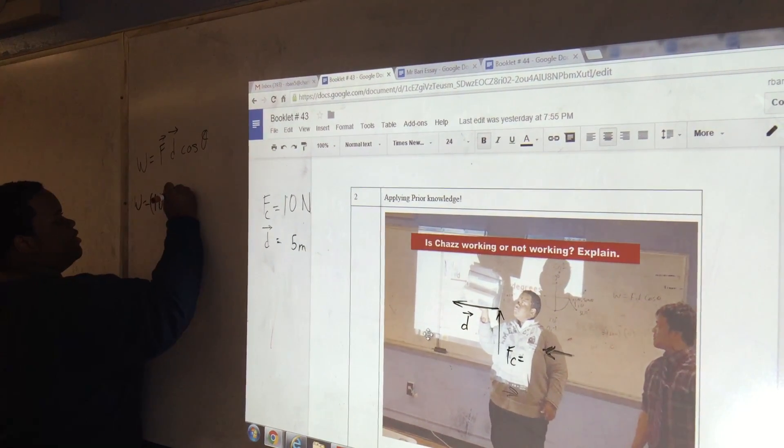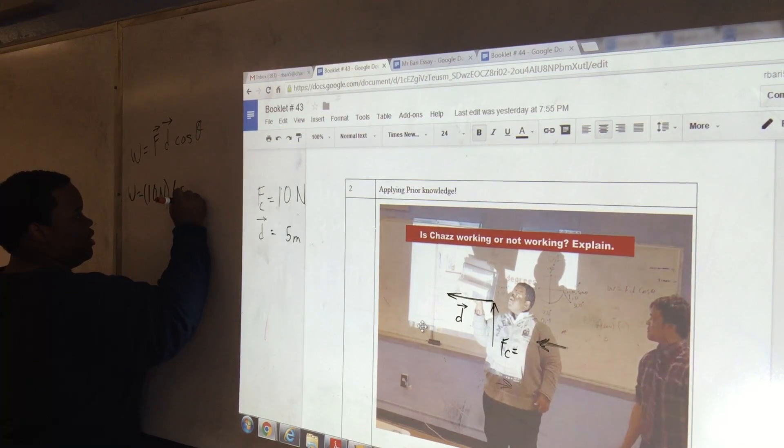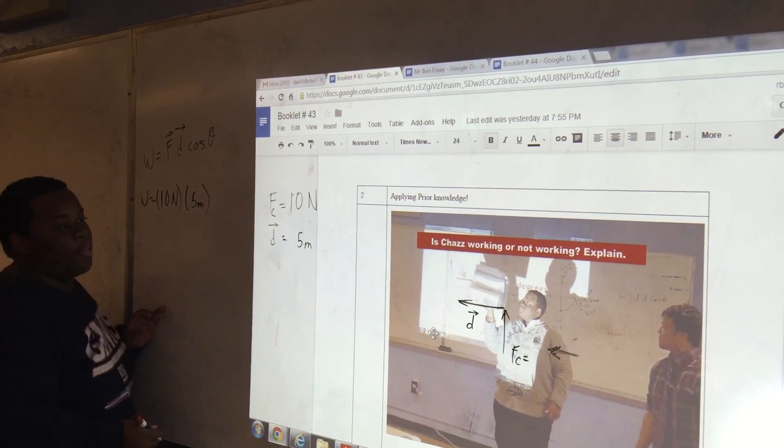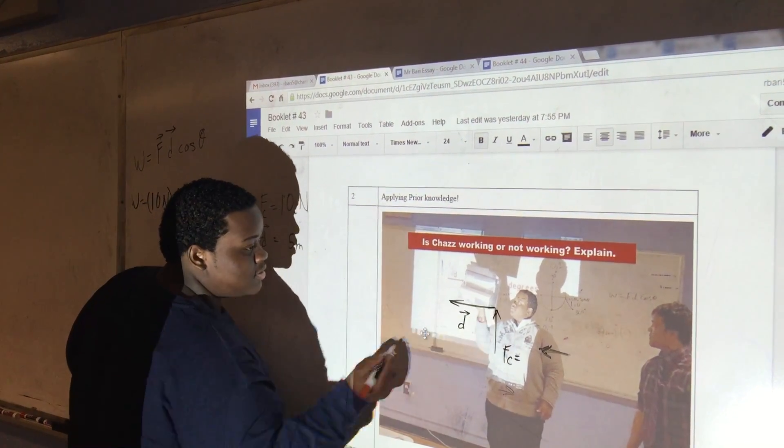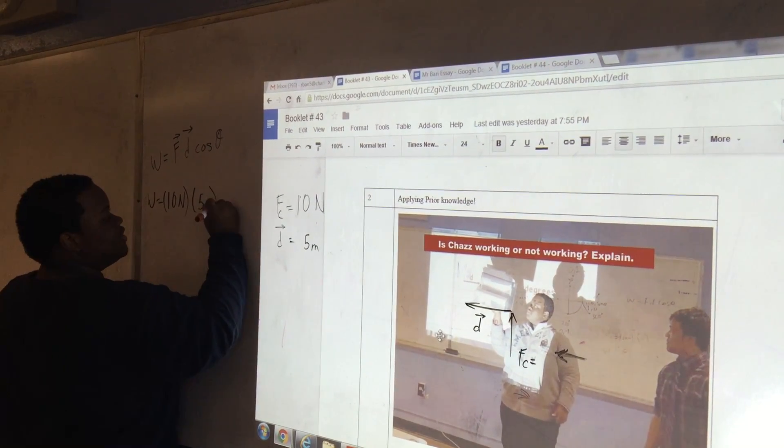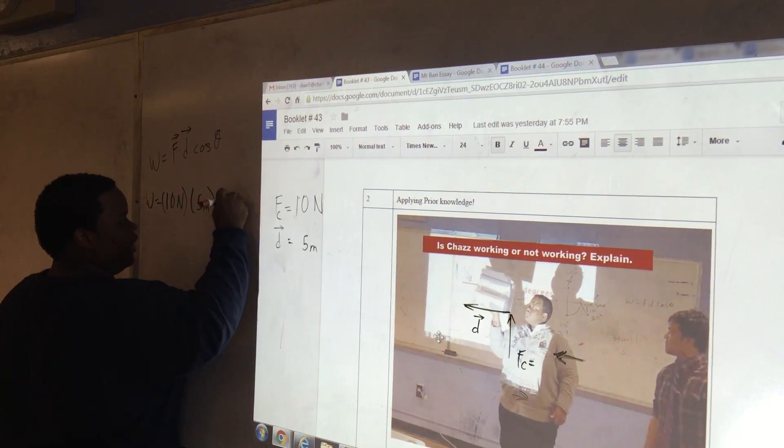So when we multiply this, we get 10 newtons times 5 meters, that gets you 50 joules. And the cosine of 90 degrees is 0.